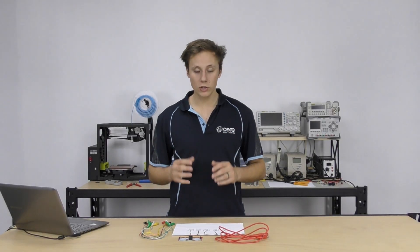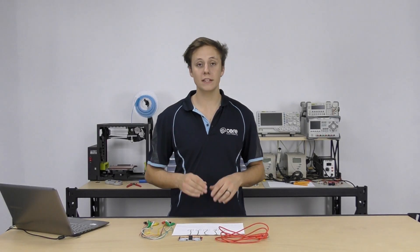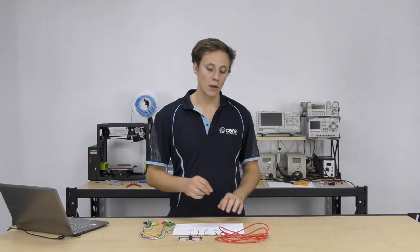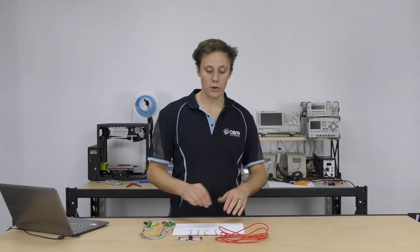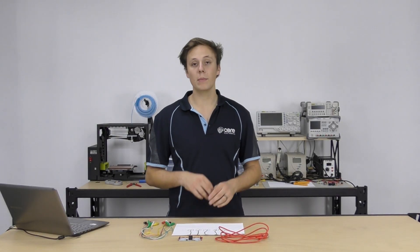And today what we're going to be doing is drawing our very own musical instrument. Yes, that's right, drawing. We can use a pencil. Now a pencil contains graphite and graphite is actually a conductor of electricity so we can draw a circuit on paper, connect our Makey Makey up to it and it's going to make the circuit using our body as well.